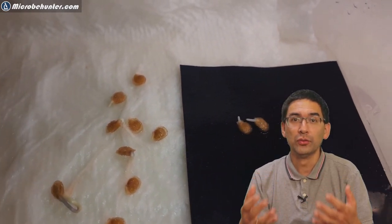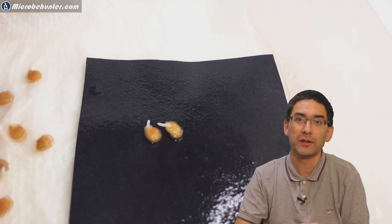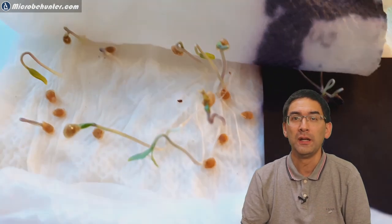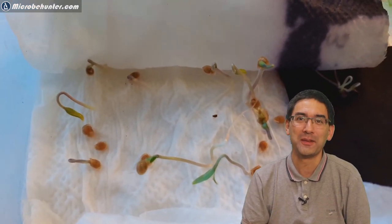In order to see the root growth better, I also placed black paper on the tissue, which is also moist, and then I put the seed on top. Unfortunately the black paper that I used also started to color off, which is not something that should have happened.